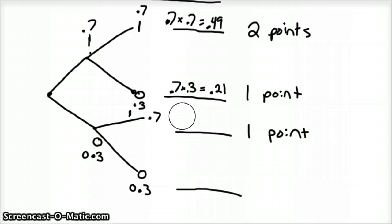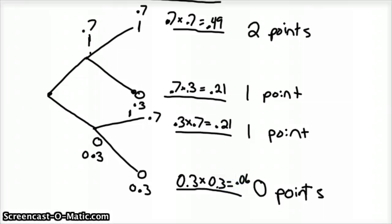And then the second one is 0.7 times 0.3. And again, like I said, commutative property here holds, but we'll keep it the same order: 0.3 times 0.7, which would also equal 0.21. That's making one point in both of those cases. And then the last one is Chokesville, 0 points. And in that case it's 0.3 times 0.3, which is 0.06.